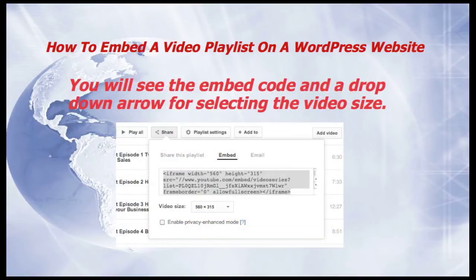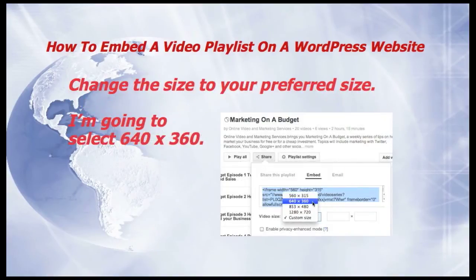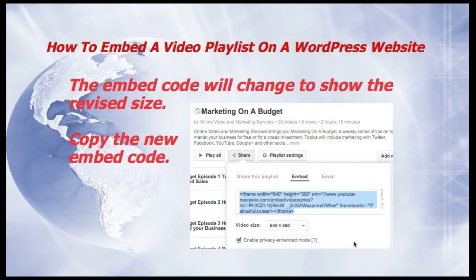You'll see the embed code and a drop-down arrow for selecting the video size. Change the size to your preferred size — I'm going to select 640 by 360. The embed code will change to show the revised size, so copy the new embed code.